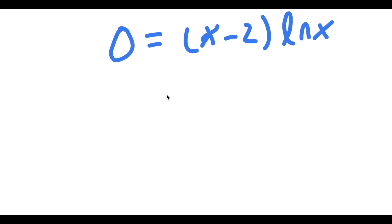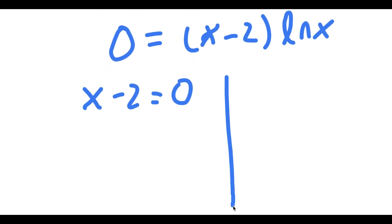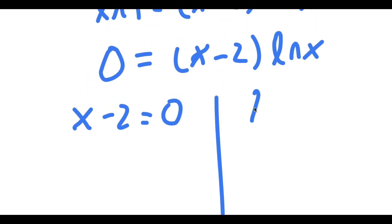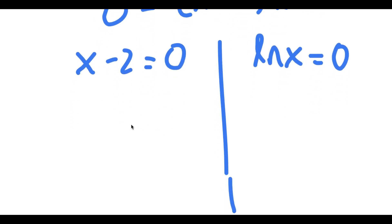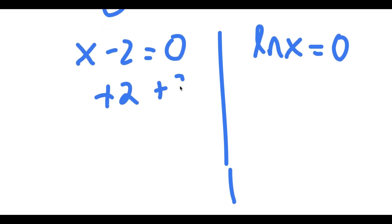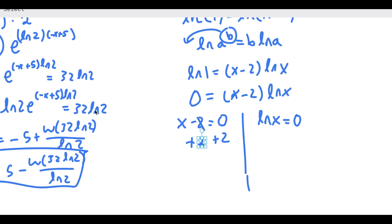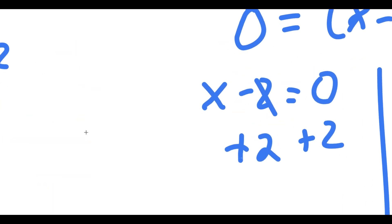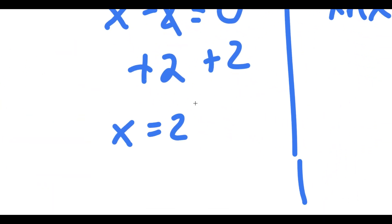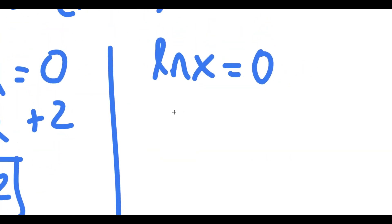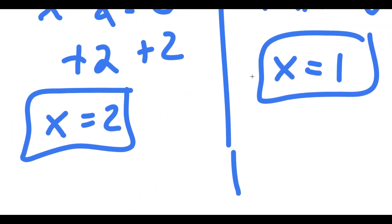This gives me two equations: x minus 2 is equal to 0, and ln of x is equal to 0. For x minus 2 equals 0, all we have to do is add 2 on both sides, and we get x is equal to 2. For ln of x equals 0, ln of 1 is equal to 0, so x is equal to 1. So my two solutions are x equals 2 and x equals 1.